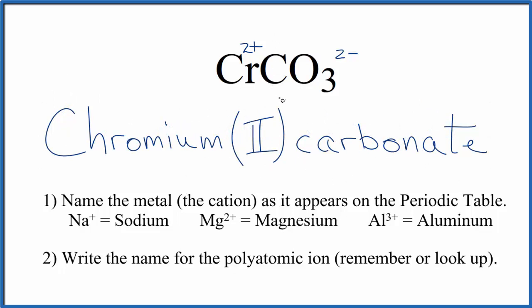If you were given the name and asked to write the formula for chromium two carbonate, you'd know that the chromium has a two plus ionic charge, the carbonate has a two minus, so you just have CrCO3.